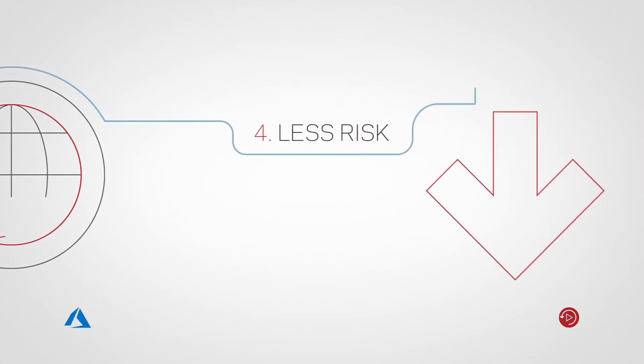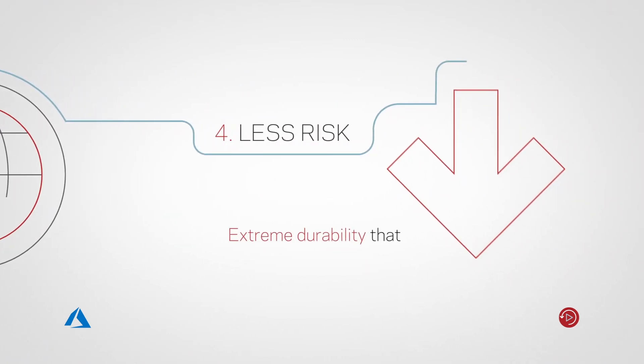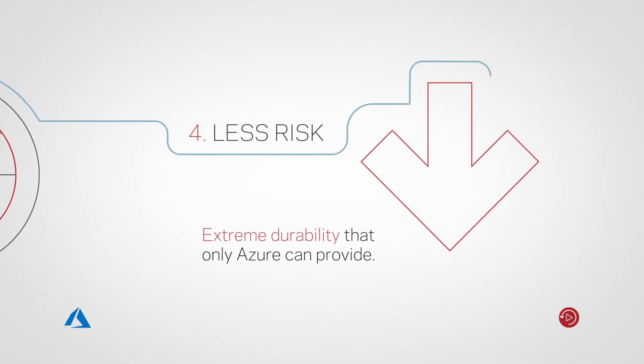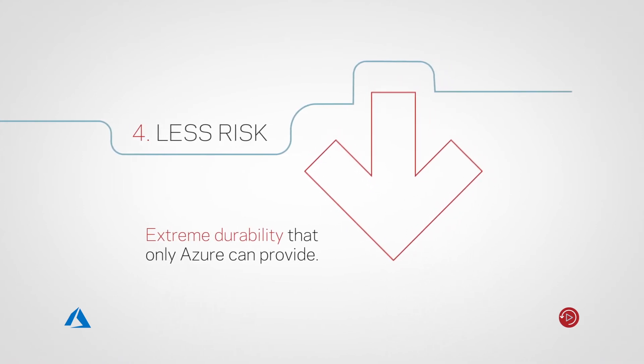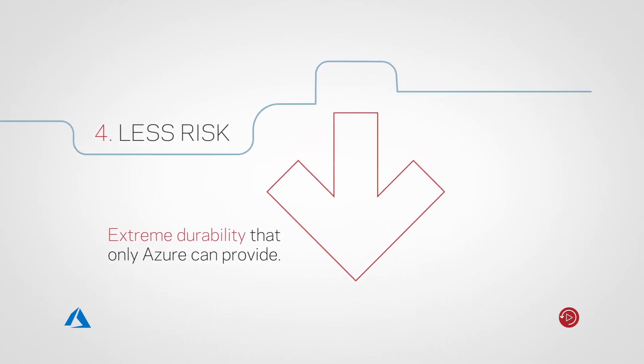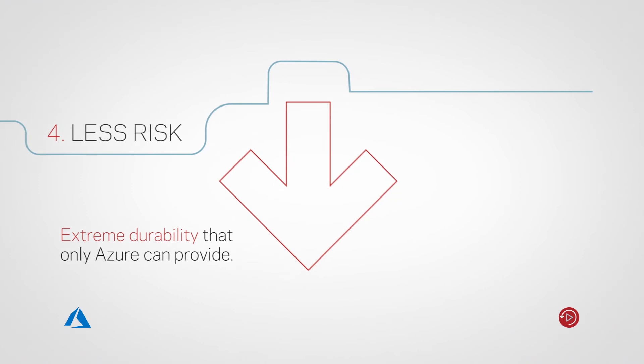First-class automation means less overhead, less risk and more availability, scalability and peace of mind, allowing you to be more productive and focus on activities that are a value add to your business.